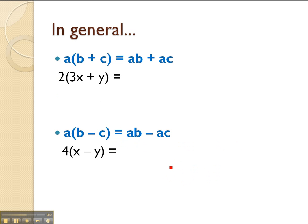So in general the rule is very straightforward. If you have A at the front and inside you've got B plus C, the answer would be A times B plus A times C. AB plus AC.